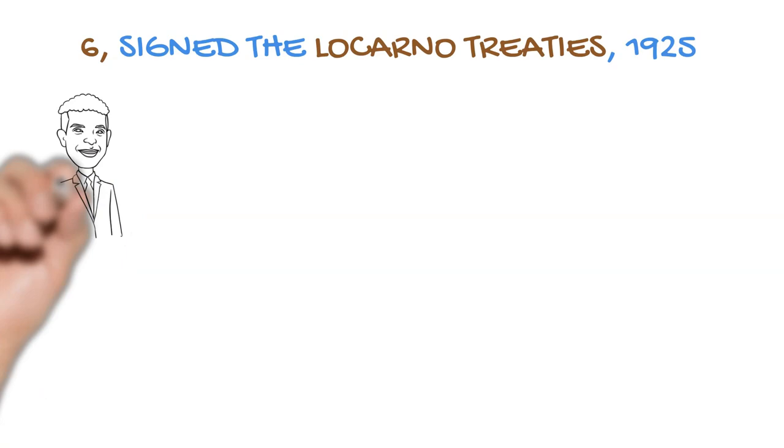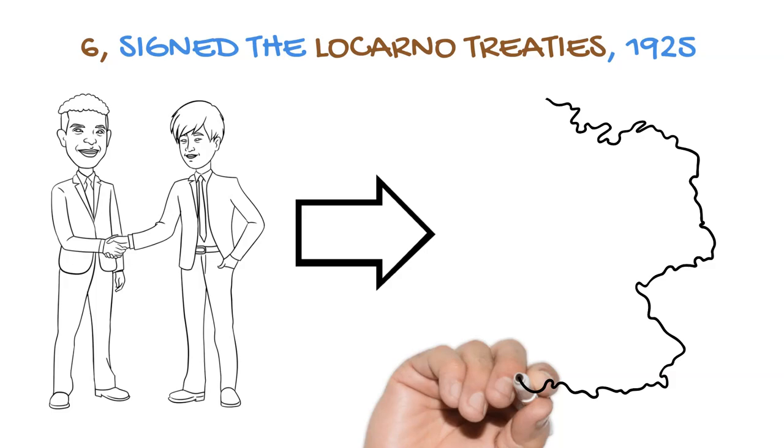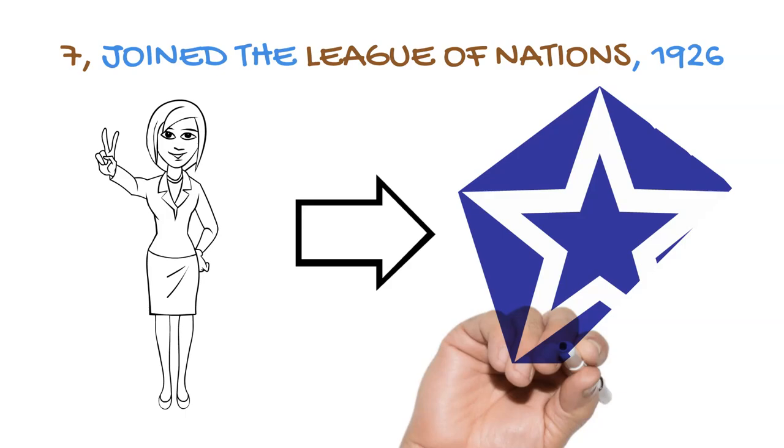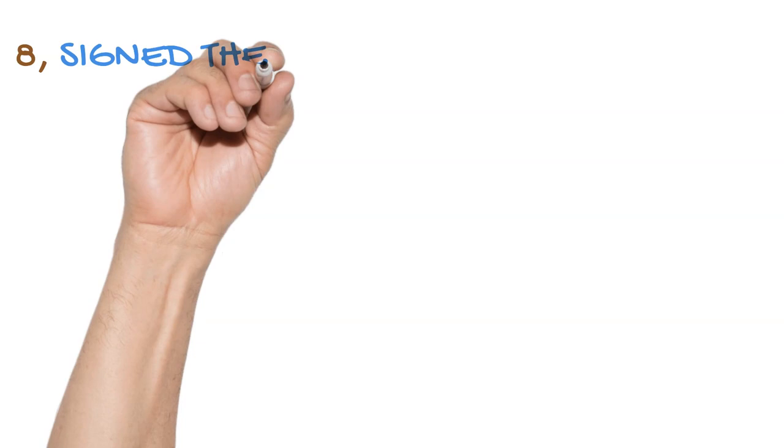So that he might restore Germany's battered international reputation, Stresemann signed the Locarno Treaties in 1925, in which Germany promised to respect the post-war borders between Germany, France, and Belgium. Partly in response to this, Germany was granted membership into the League of Nations in 1926. As a consequence, Germany's international image was rehabilitated and she could now sit at the diplomatic table with other world powers.